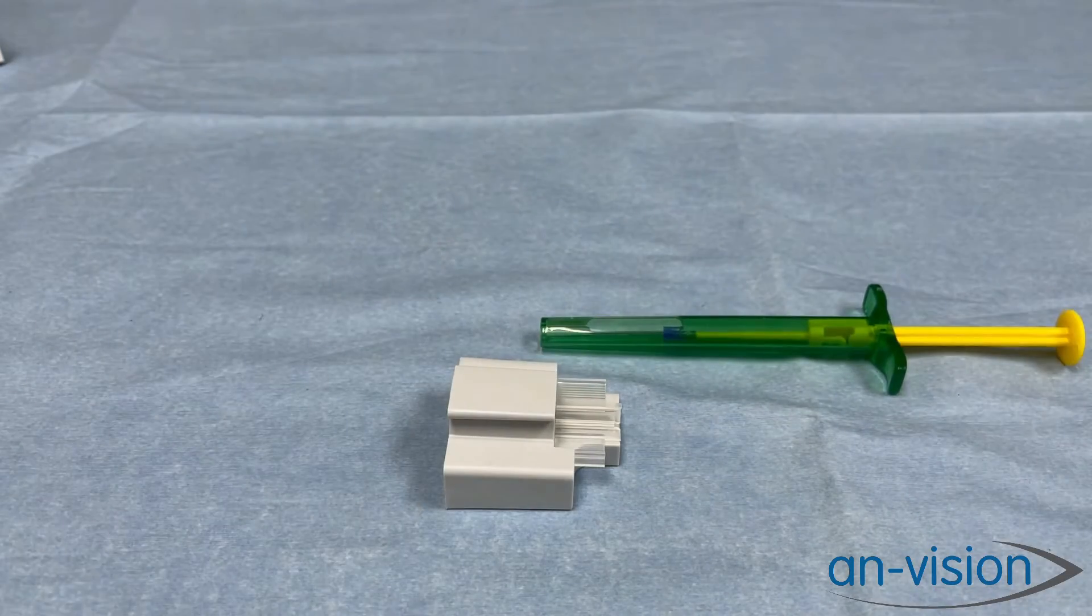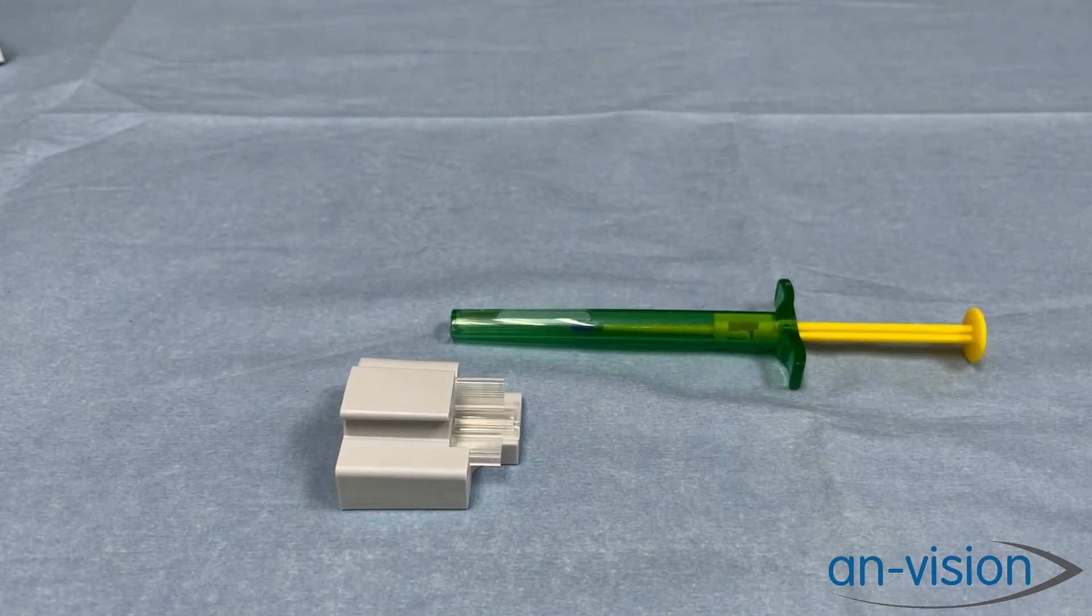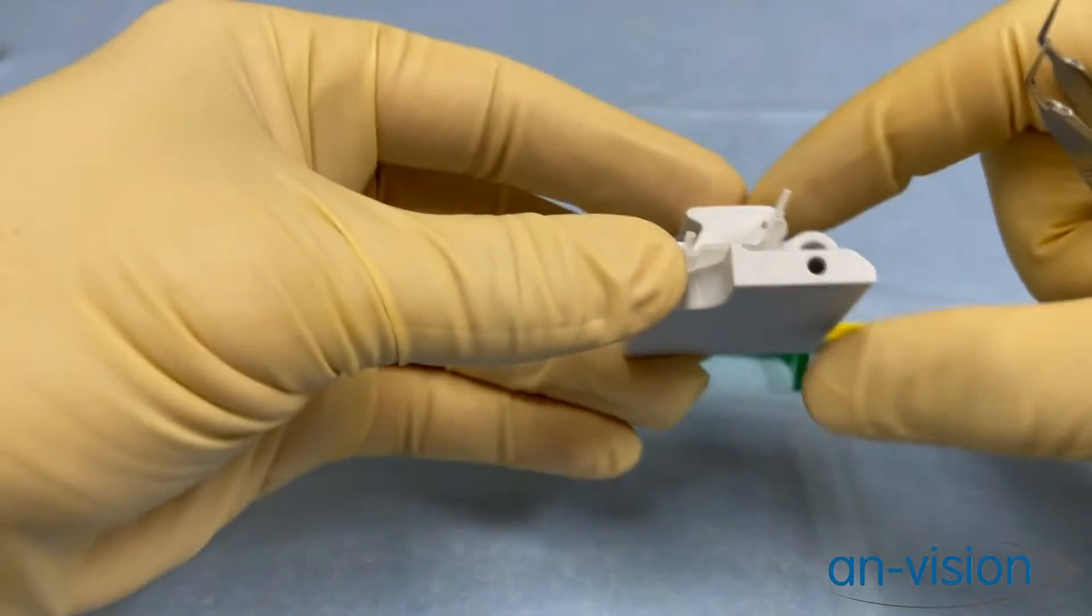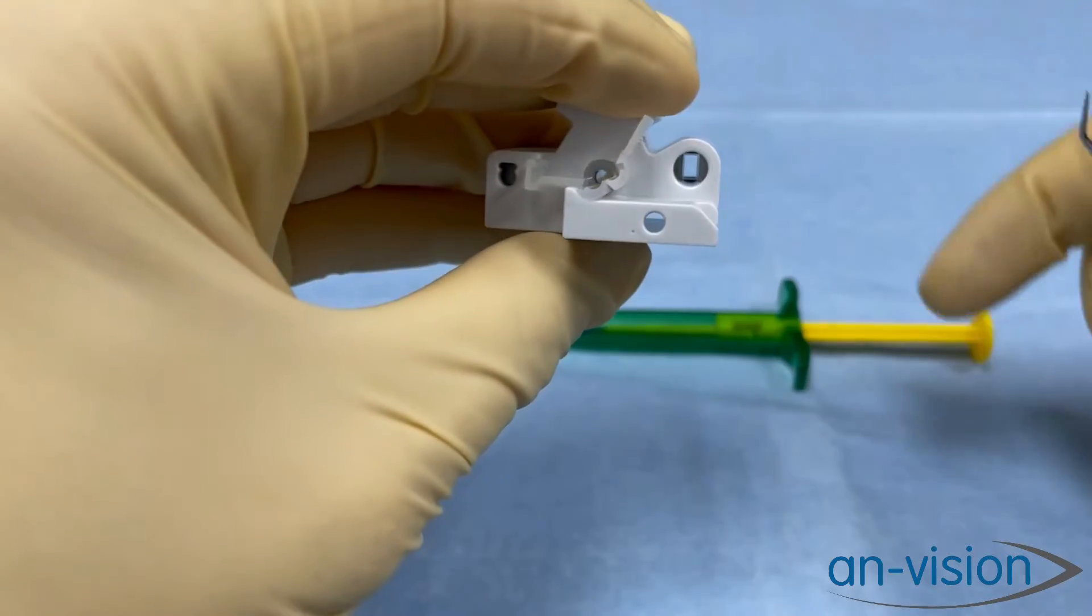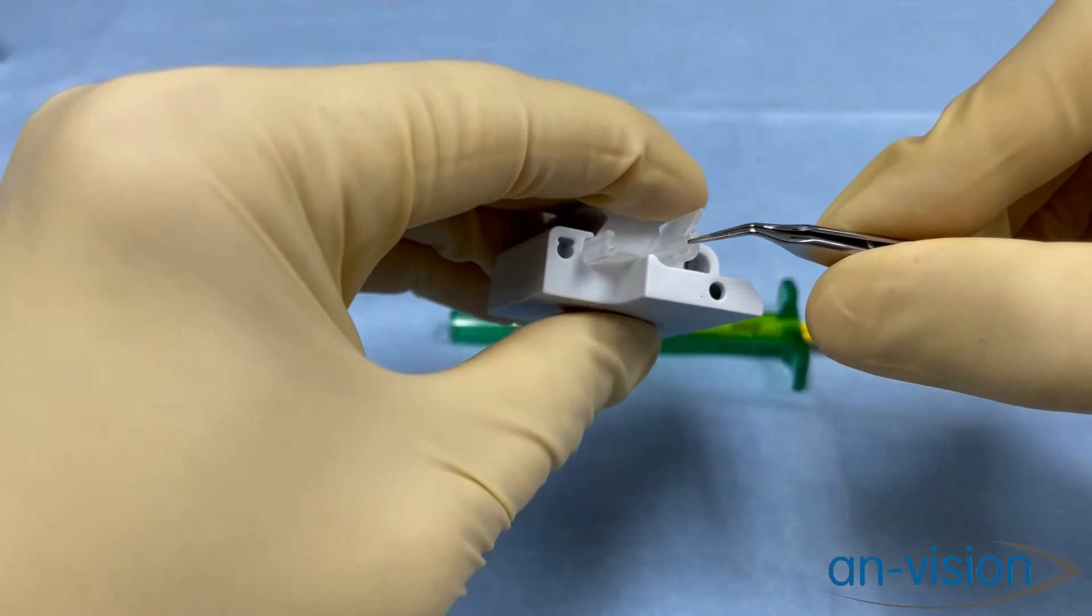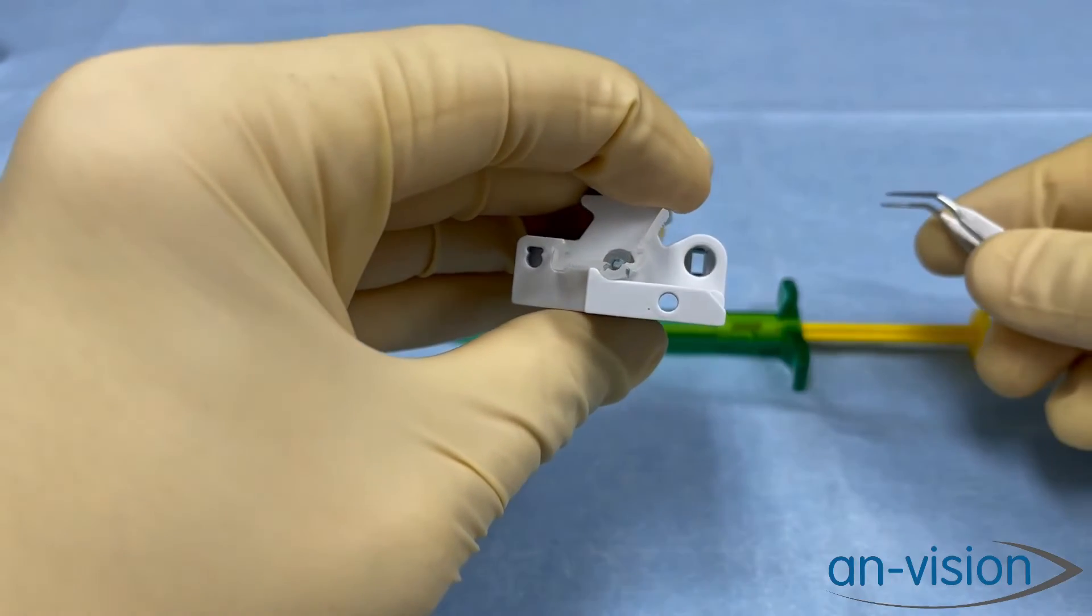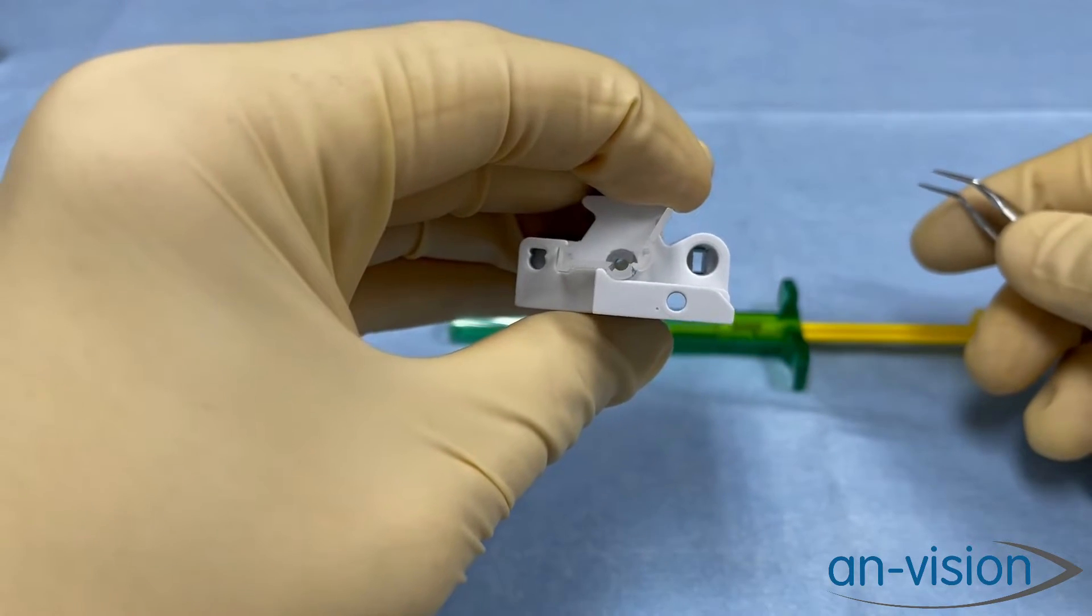Now, when we are loading an IOL into the Viscoject Easy, one thing we want to remember is in the loading chamber, there are grooves set in the base. These grooves are to hold the IOL in place as we close the flaps,